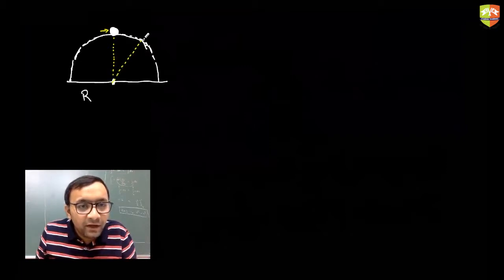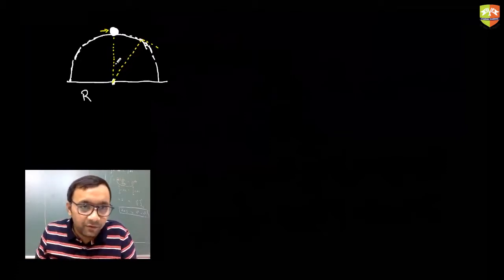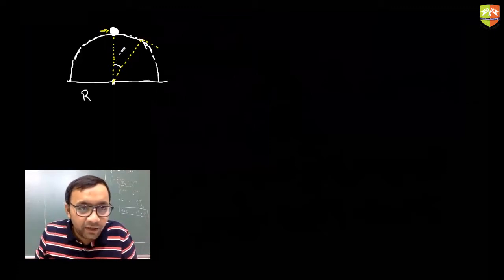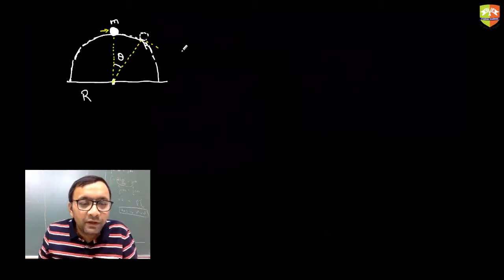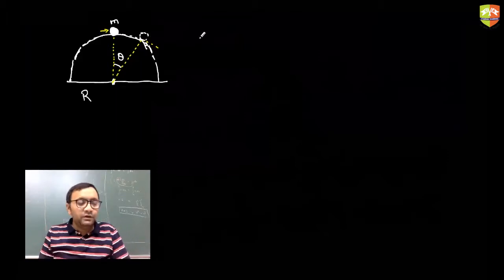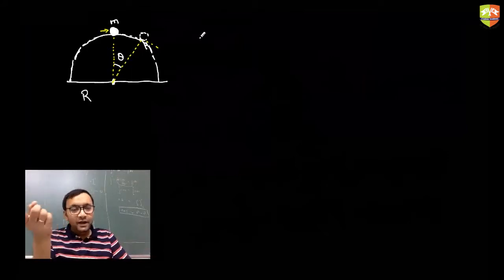As it moves down, at some angle it will leave the sphere — it may not move along the sphere the entire time. There is a point where it leaves the hemisphere. Let's say that angle is theta with the vertical. You need to find the angle theta at which this mass m leaves the hemisphere.